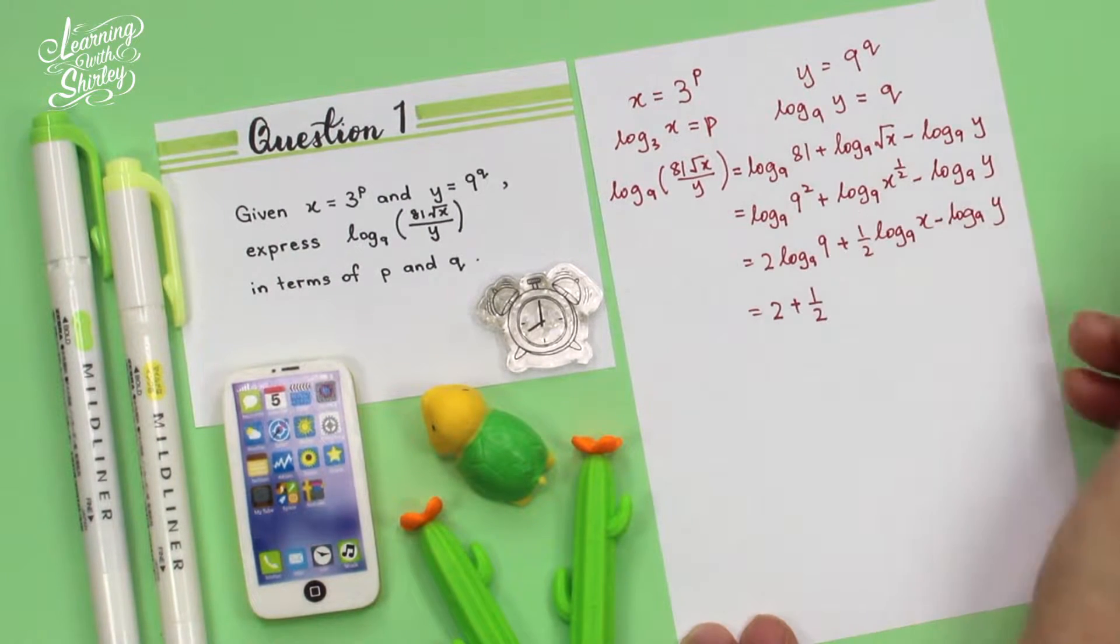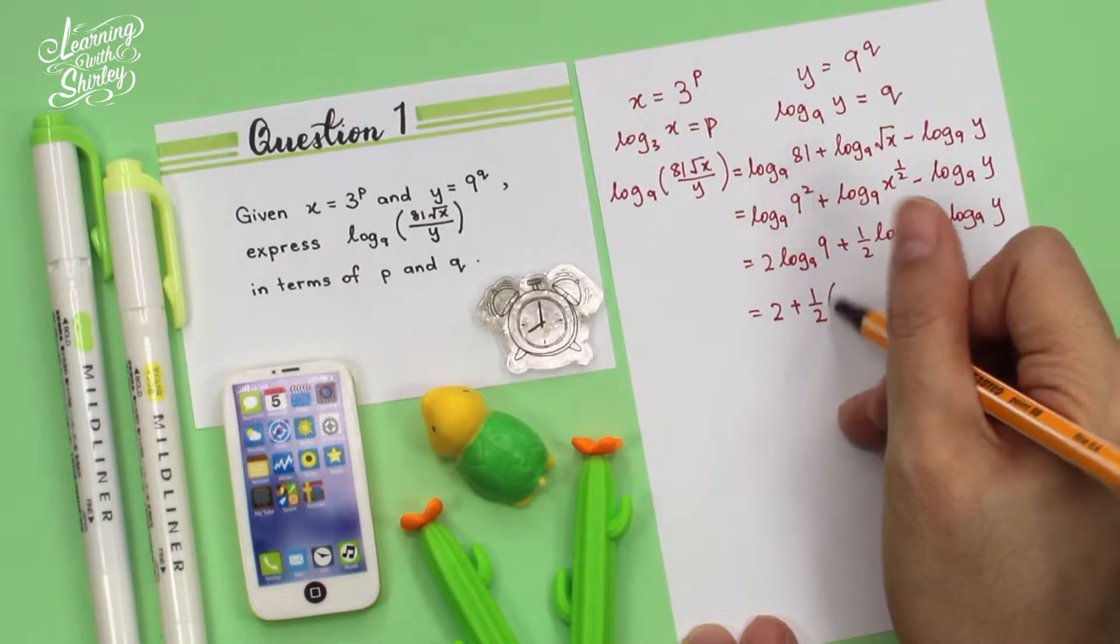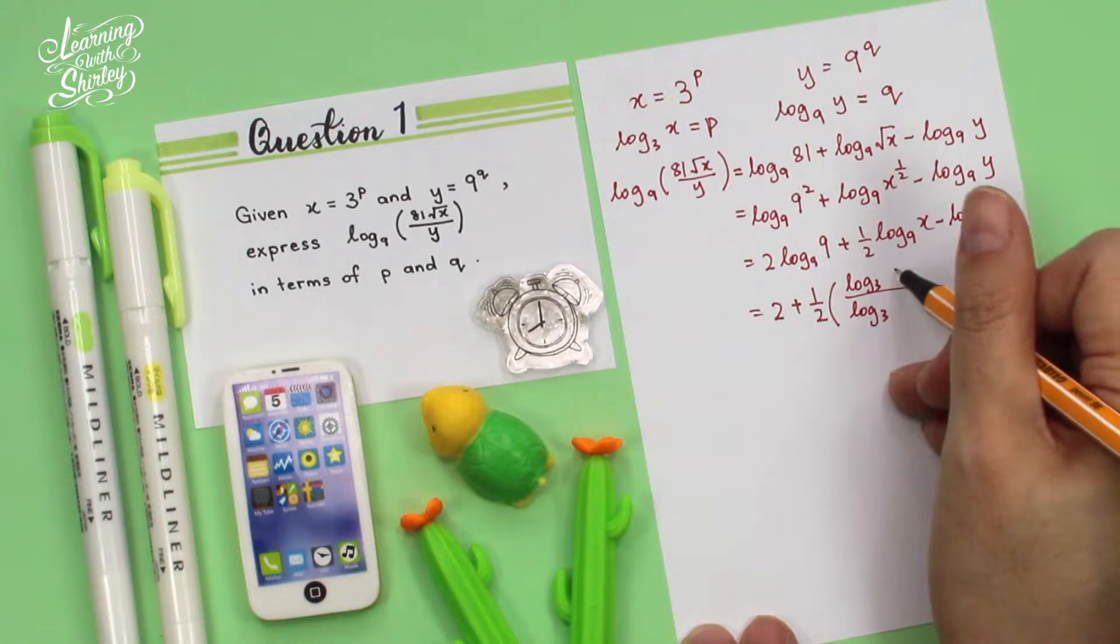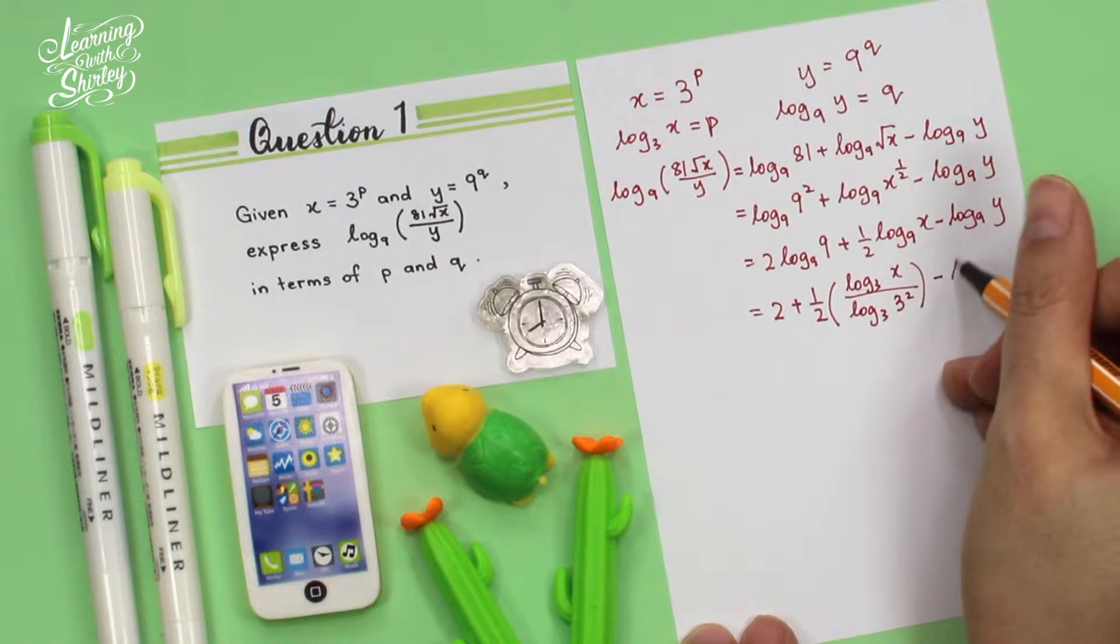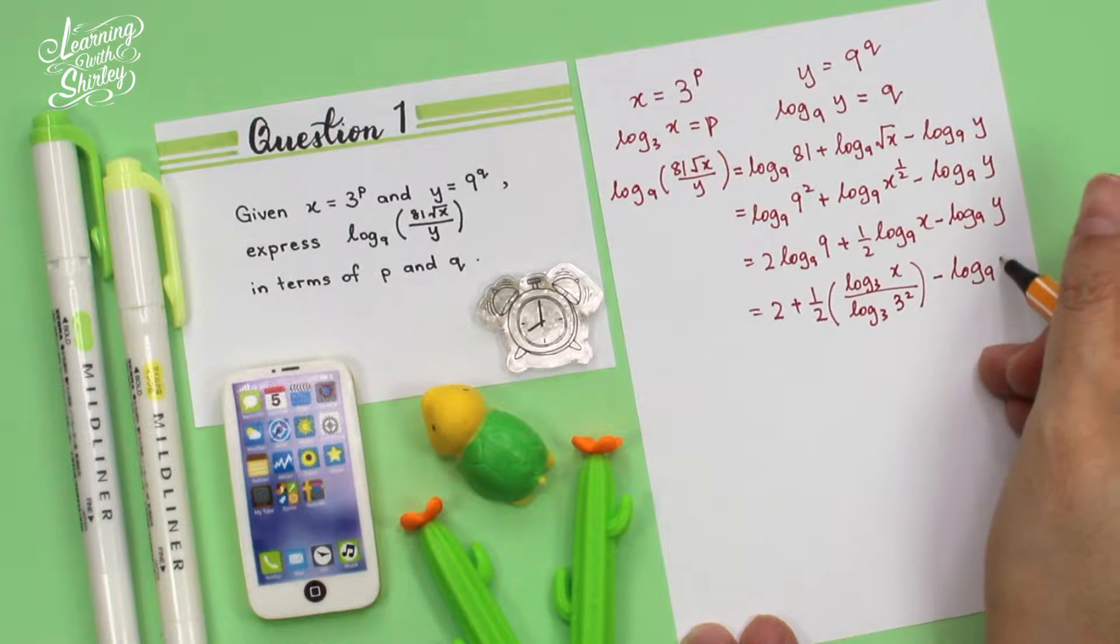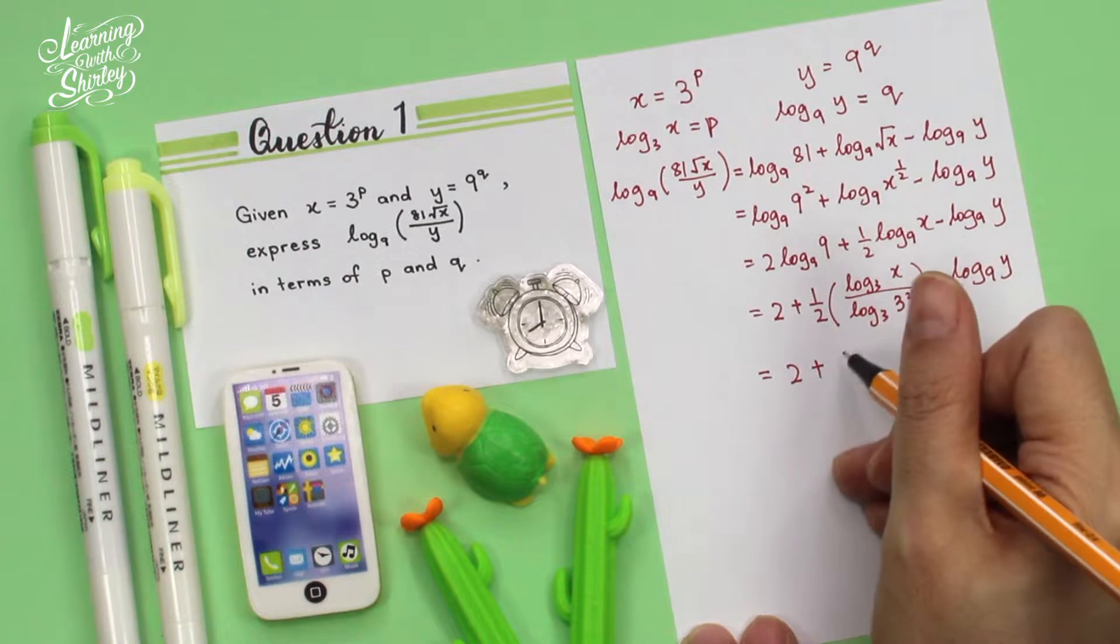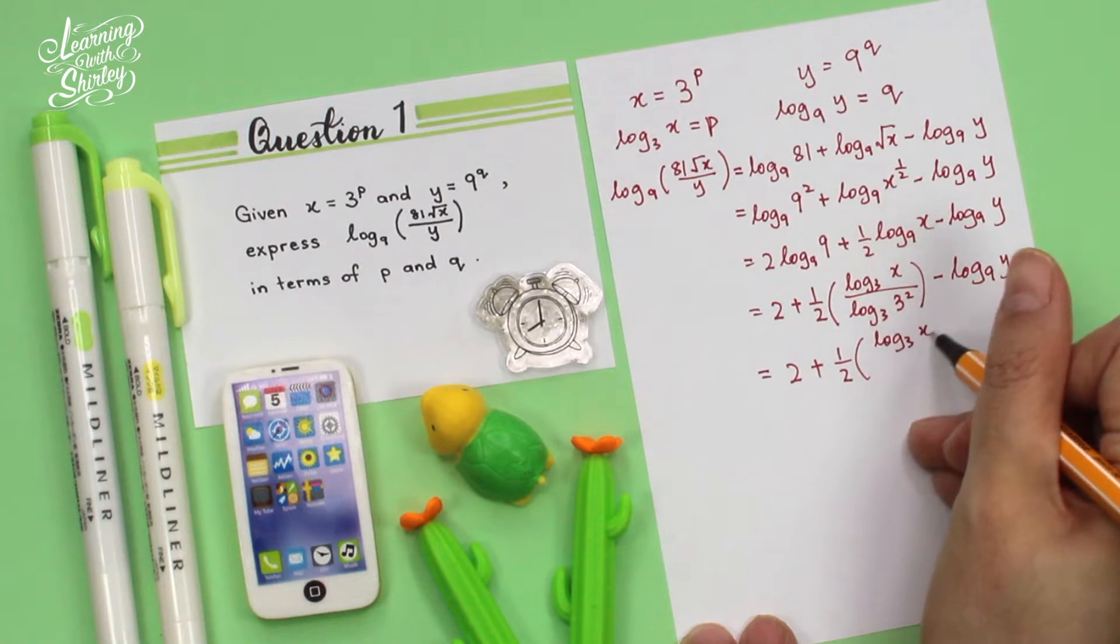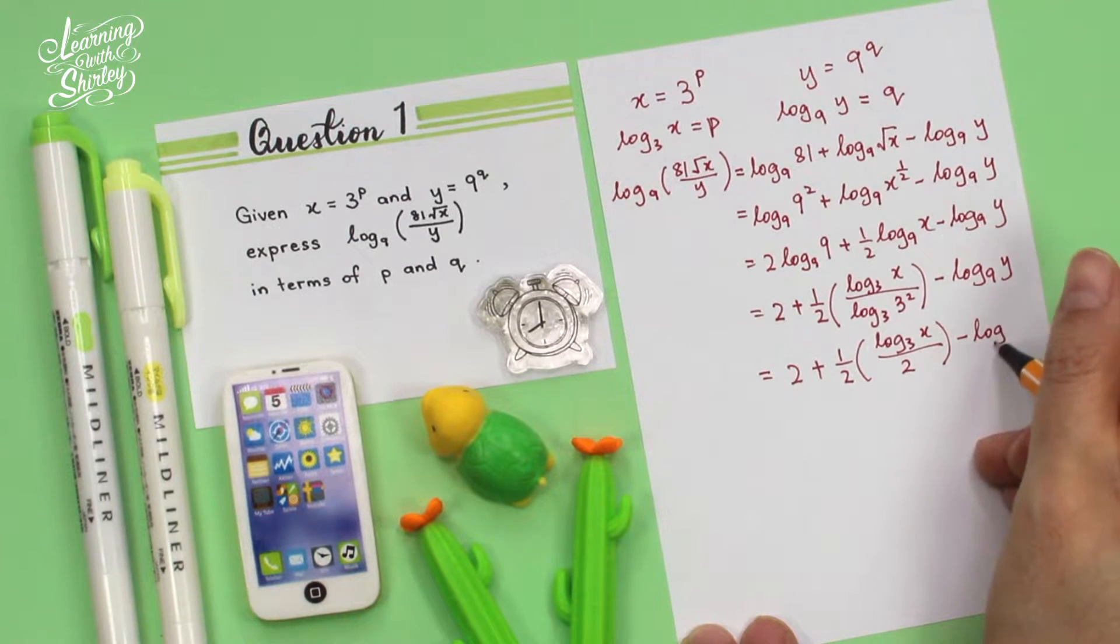So half... this is base 9, but it's given here base 3. I'm going to change it to base 3. So it becomes (log base 3 of x) / (log base 3 of 9). So 9 is 3 squared, minus log y. So equals 2 plus half log x over 2 log 3, which is 2 times 1 equals 2, minus log y.